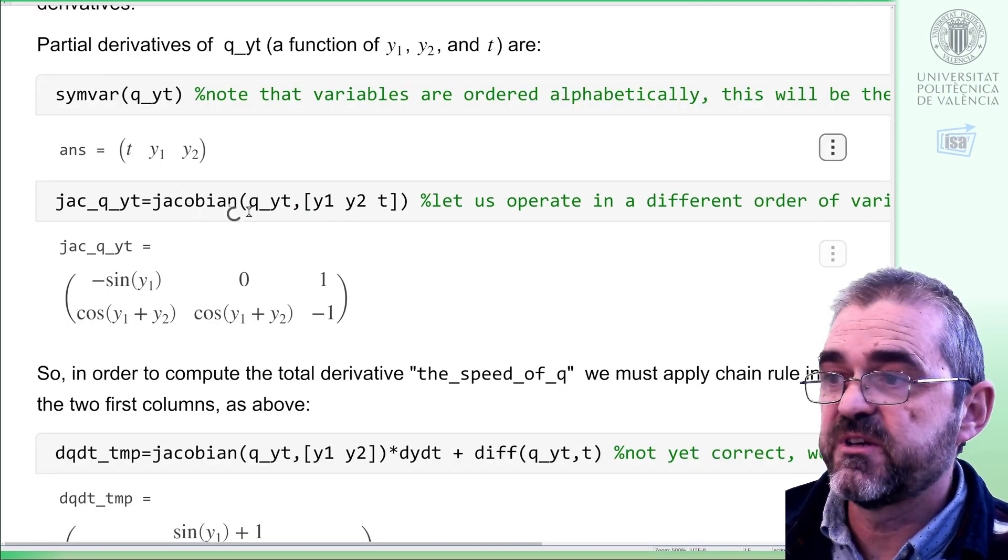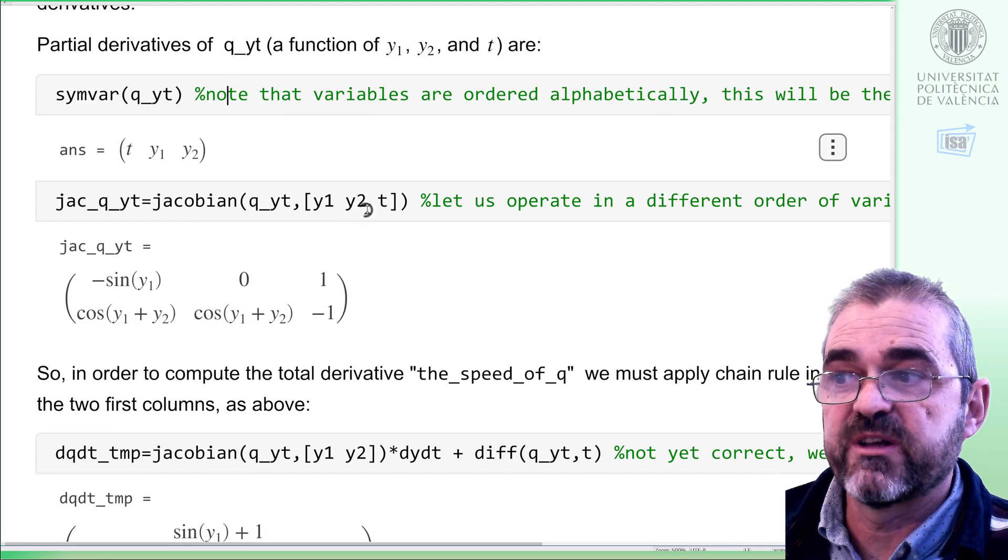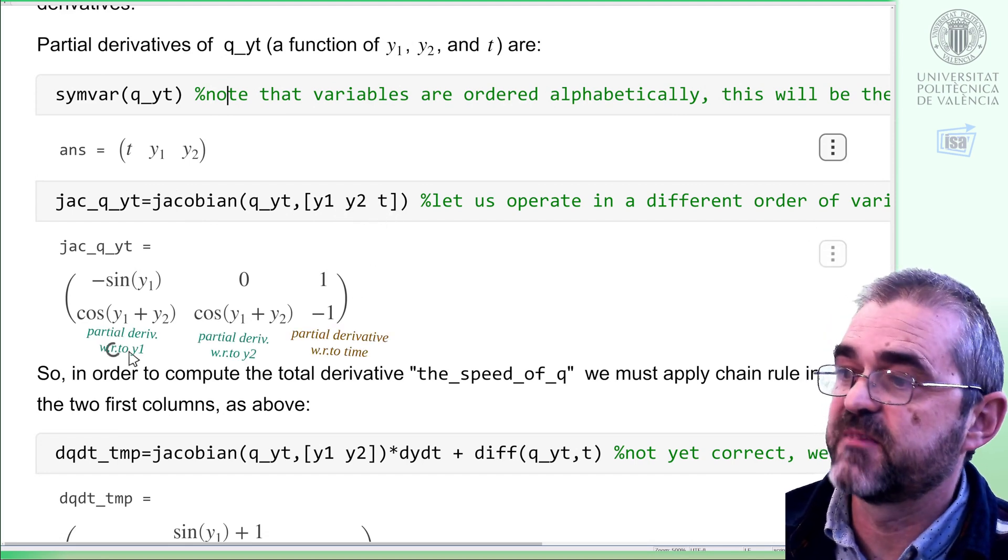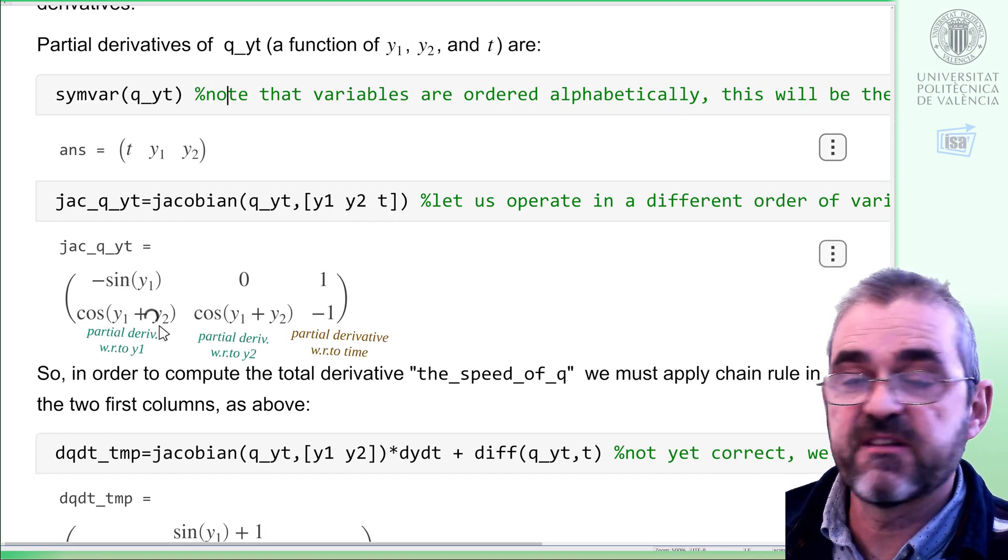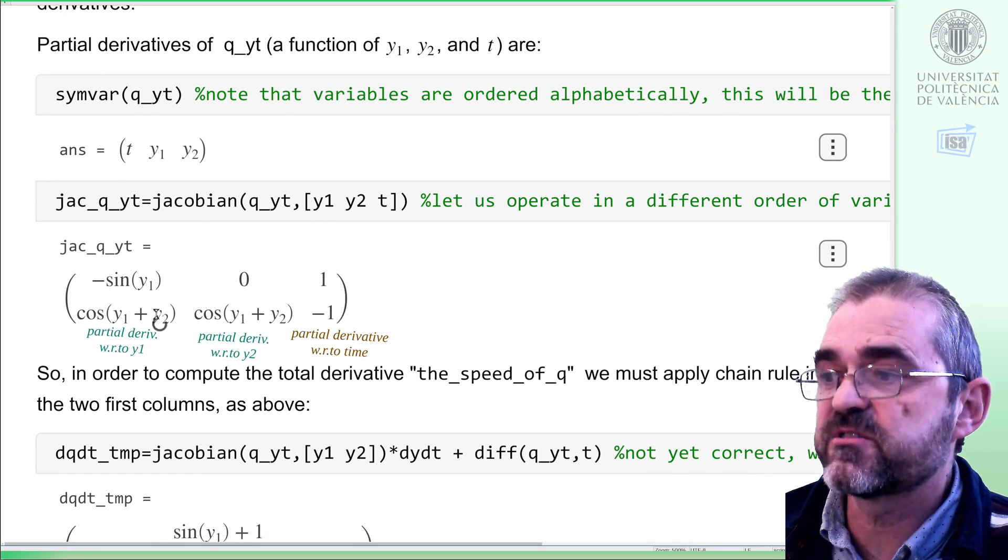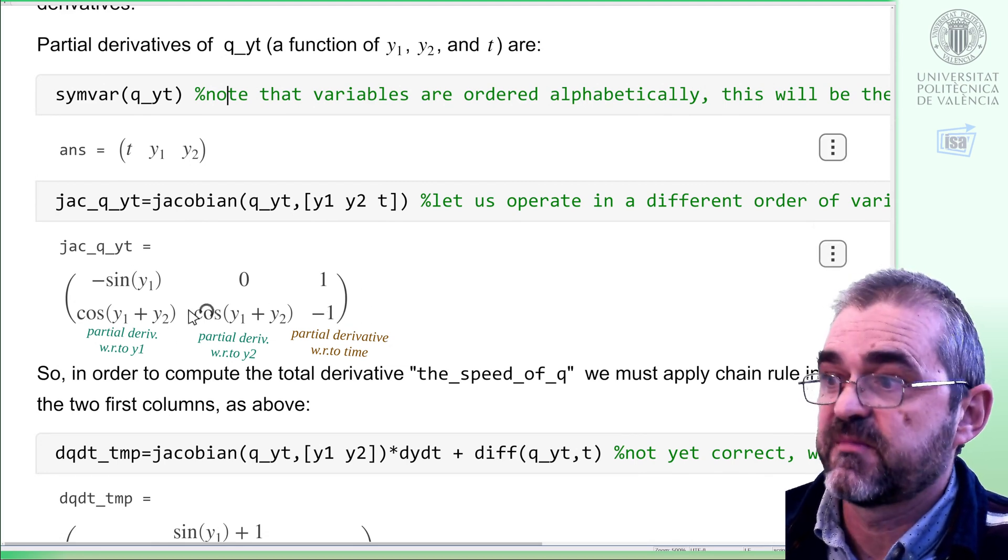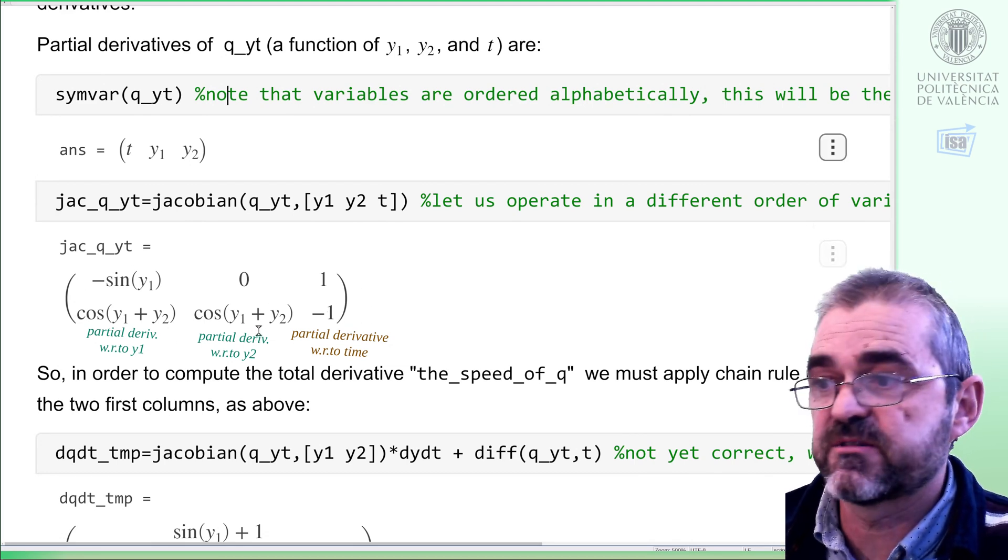We will take Jacobian in this order, y1, y2, and t, so this is it. Partial derivatives of that expression depending on three variables will have three columns and two rows because it has two outputs.